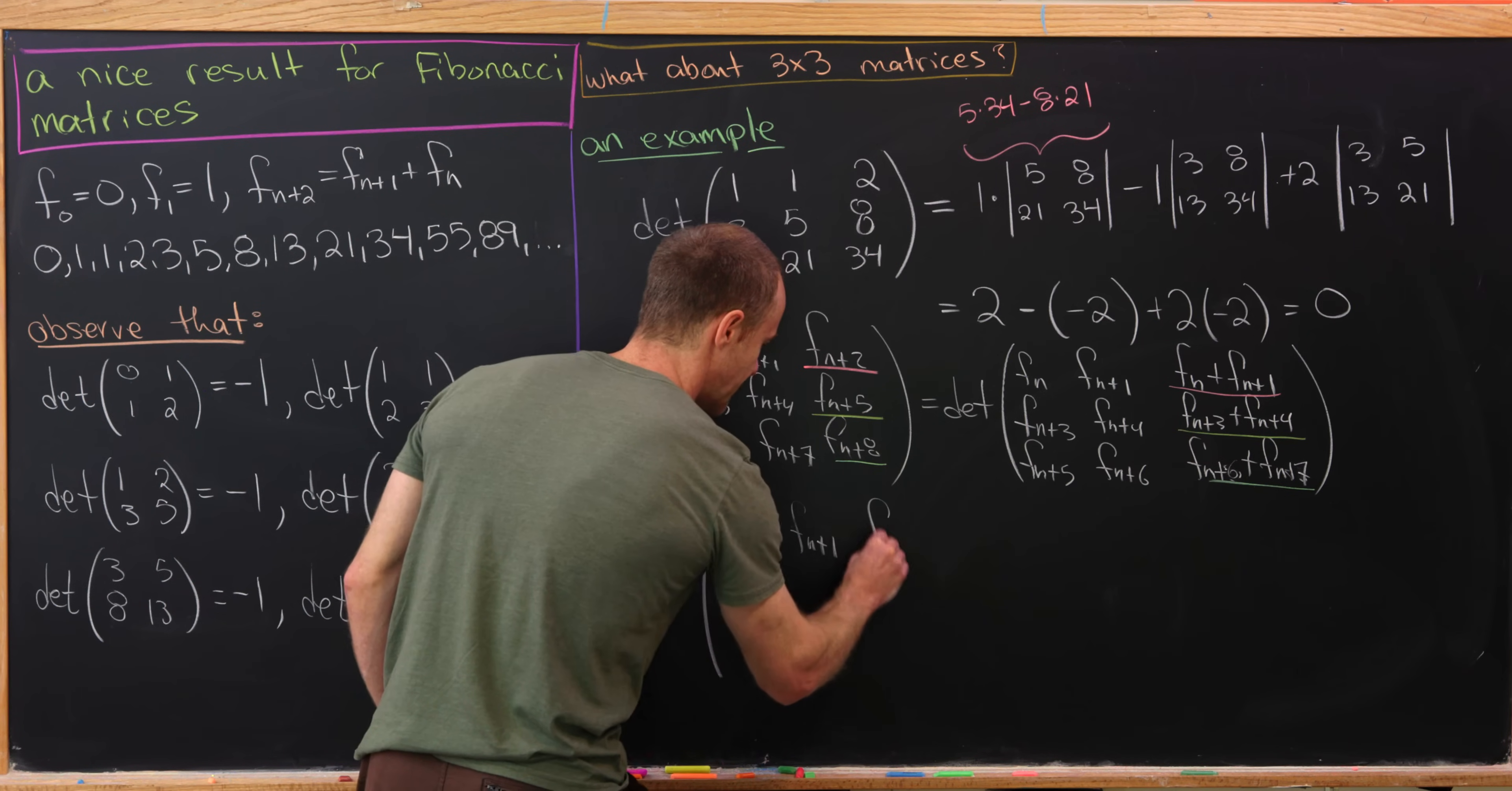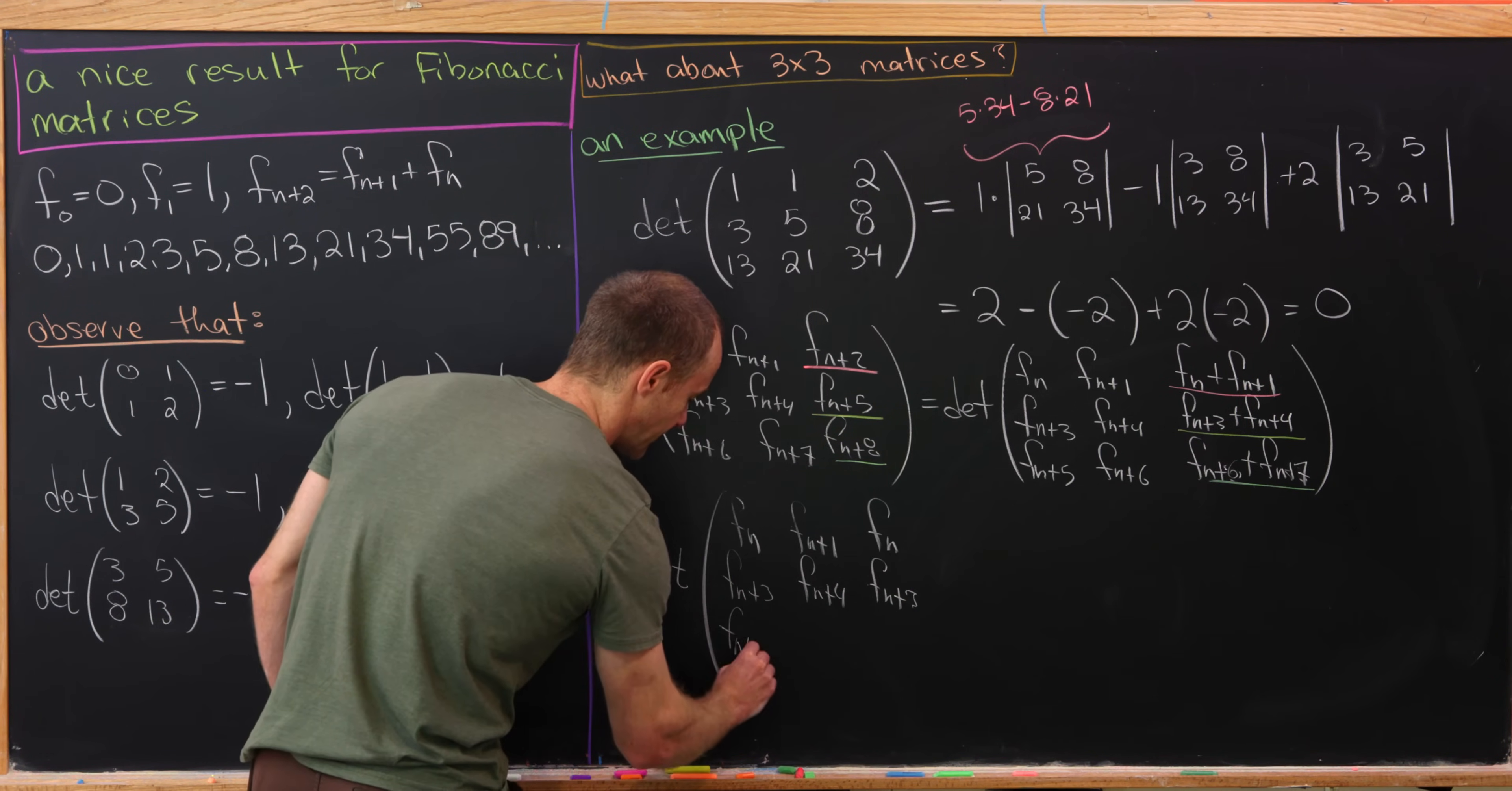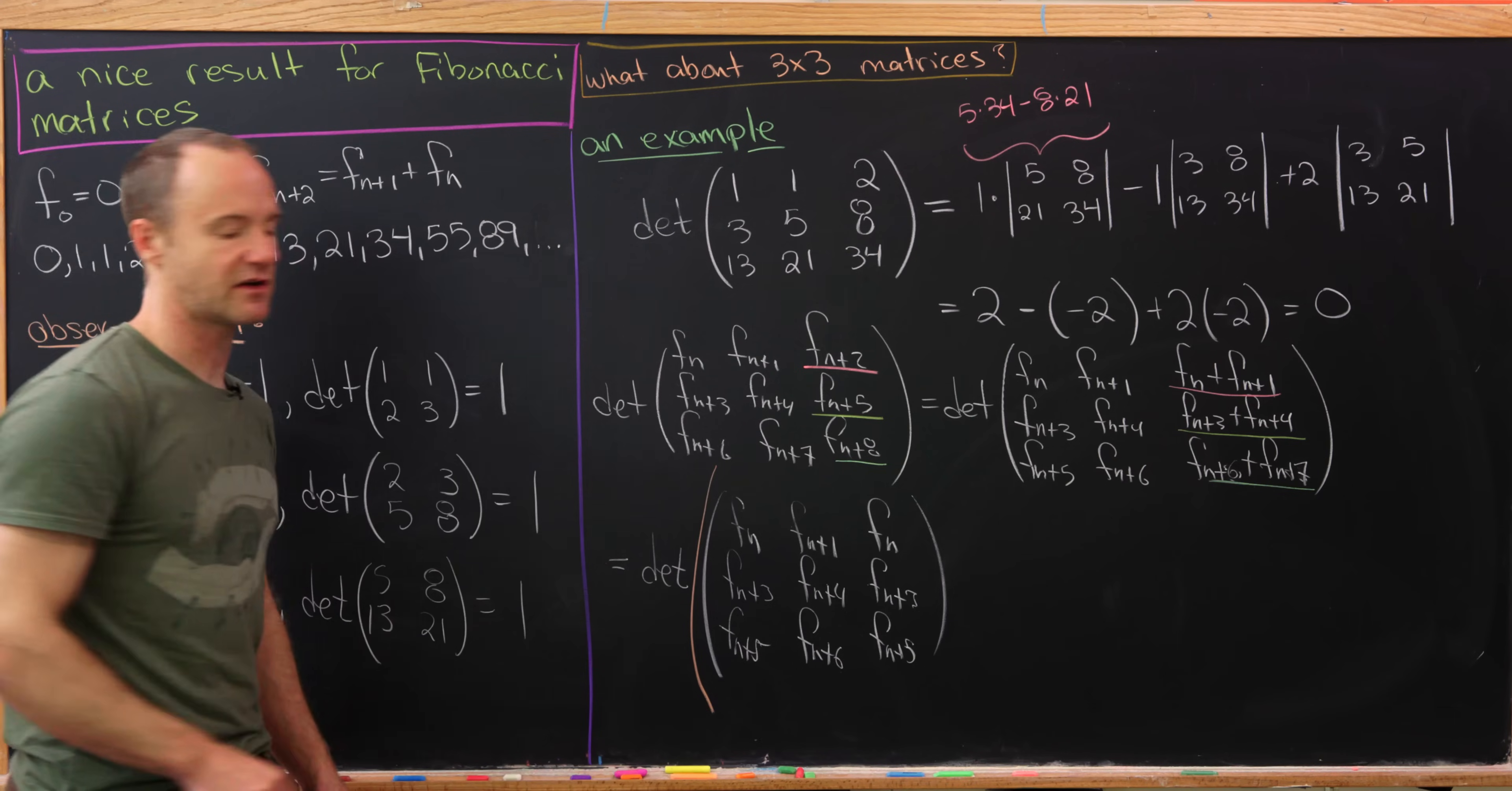But that being said, to really see it using a similar method to what we had on the last board, we can express this as the product of two matrices. So let's see if we can do that real quick. So I'm going to write this as fn, fn+1, fn. And then we'll have fn+3, fn+4, fn+3. And then fn+5, fn+6, fn+5. So that's not a typo. I really do have the same first and third column.